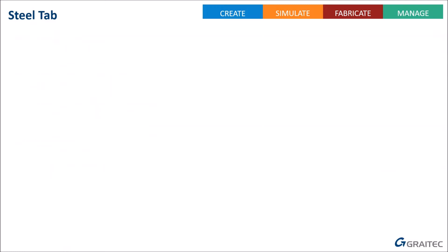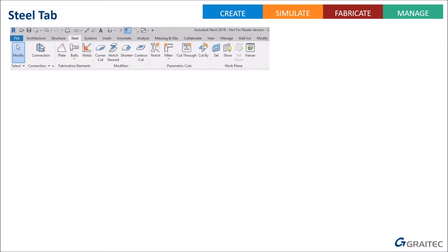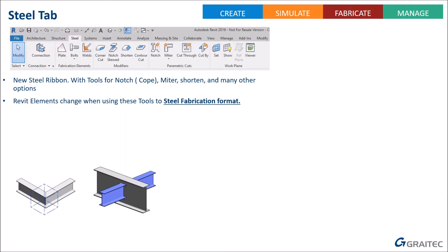Before we start, let's look at the steel tab. In Revit 2019 a new tab was added with tools for notching, mitering, shortening, and putting steel connections on. These tools now replace the normal cuts, mitres, and copes for steel elements. One thing to bear in mind: when you use these elements, it changes your steel beam into what's called a steel fabrication format. Things like cutbacks get disabled as soon as you apply a connection, and you can't put elements into groups.